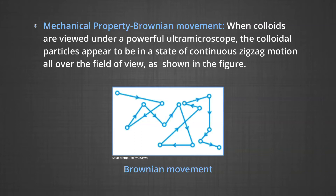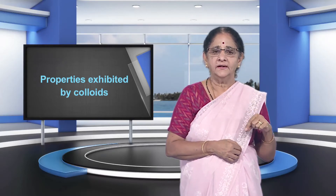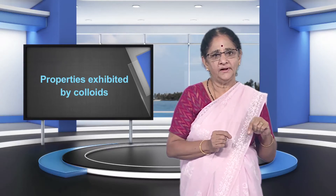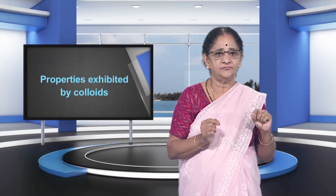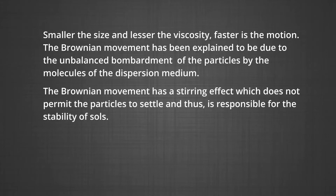Number four, mechanical property. Brownian movement. When colloids are viewed under a powerful ultramicroscope, the colloidal particles appear to be in a state of continuous zigzag motion all over the field of view, as shown in the figure. This motion was first observed by the British botanist Robert Brown and is known as Brownian movement. This motion is independent of the nature of the colloid, but depends upon the size of the particles and viscosity of the solution. Smaller the size and lesser the viscosity, faster is the motion. The Brownian movement has been explained to be due to the unbalanced bombardment of the particles by the molecules of the dispersion medium. The Brownian movement has a stirring effect which does not permit the particles to settle and thus is responsible for the stability of sols.